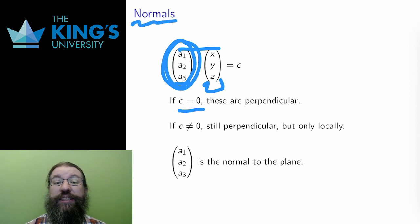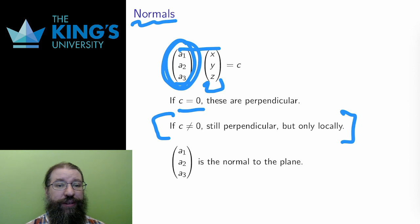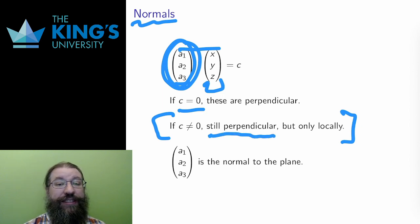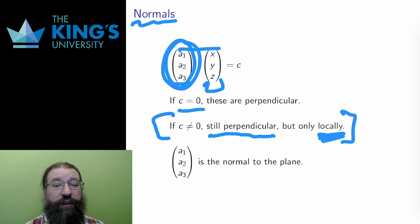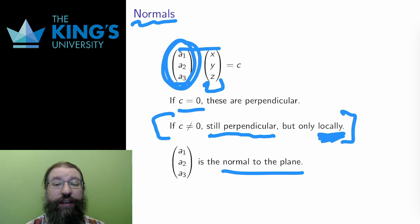That is the case when c equals 0. The remarkable thing is that this construction still makes sense when c is not equal to 0. In this case, the vector a1, a2, a3 is still perpendicular to the plane, but only as a local direction vector at some point on the plane. It is still called the normal vector, but I just have to remember that it acts as a local direction vector. So, that gives me a way to calculate equations of planes.